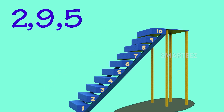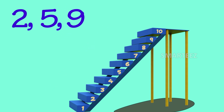But we know that the jumps have to be always going up for ascending order. So let's rearrange it again — this time we will move 5 and 9, so it will be 2, 5 and 9.